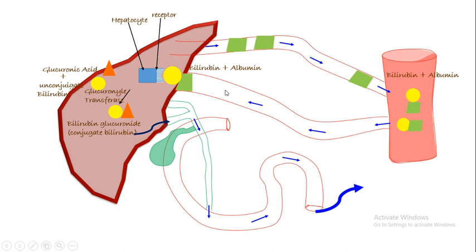Unconjugated bilirubin enters the hepatocytes of the liver. In the hepatocytes, bilirubin combines with glucuronic acid and is converted into conjugated bilirubin or direct bilirubin. This reaction is catalyzed by glucuronic transferase. Conjugated bilirubin is a water-soluble product.